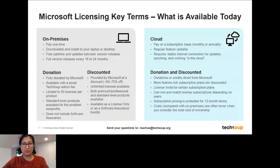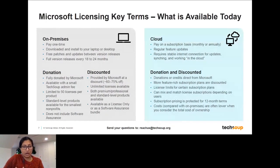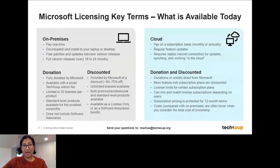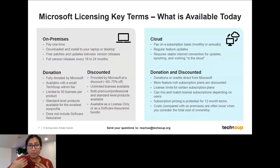The on-premises solutions are things like Office Standard and Windows upgrades. On-premises licenses are typically device-based licenses that you download to a specific device. You only pay one time for that license and you can install that product on your device for as long as you want. There will be free patches available for security updates, but if you want a new version or non-security updates, you would have to buy or request another version. Products include Office Standard, server licenses, and Windows. These are available either as donations or as discounts from Microsoft.